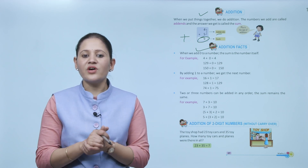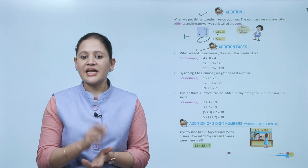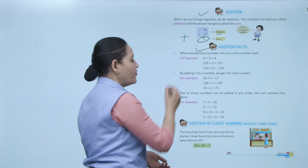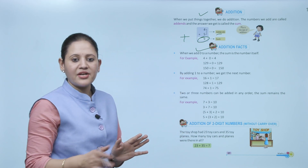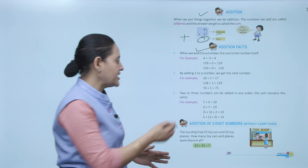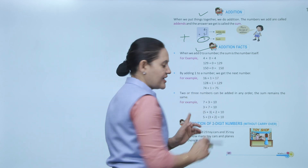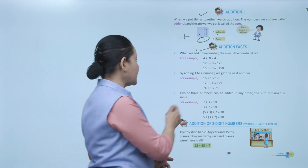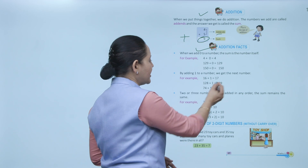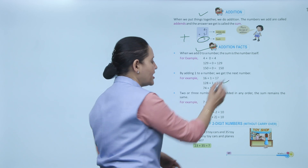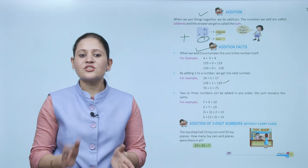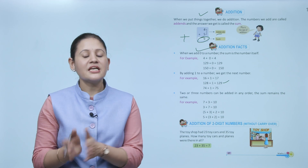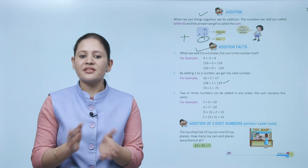Next, by adding one to a number we get the next number — the successor. Like 16 plus 1 is 17, which is the successor of 16. And 128 plus 1 is 129.